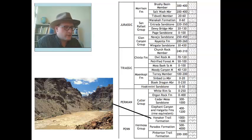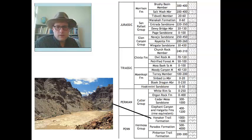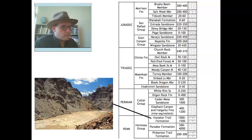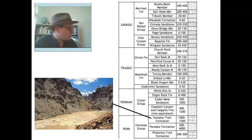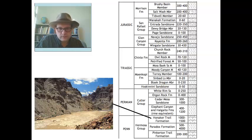If you head south into Arizona, the Honaker Trail Formation becomes much thicker when you reach the margins of the Paradox Basin, especially to the south and to the west. Here are some outcrops of the Honaker Trail Formation, much thicker than what we actually see in the center of the Paradox Basin.